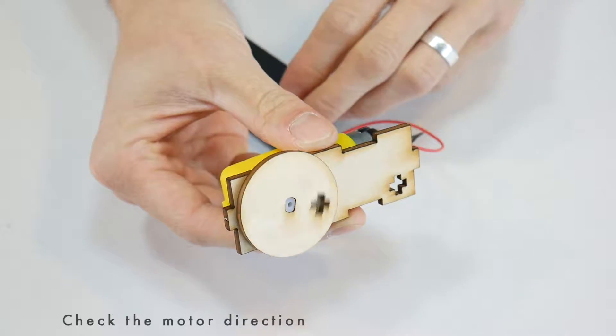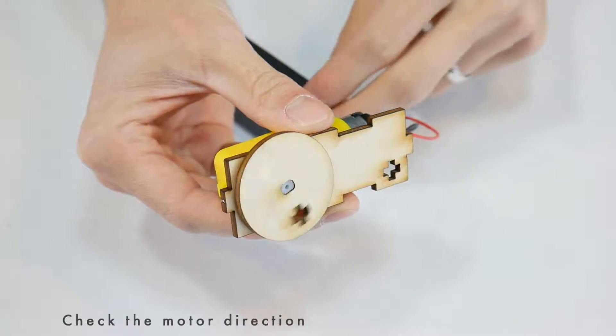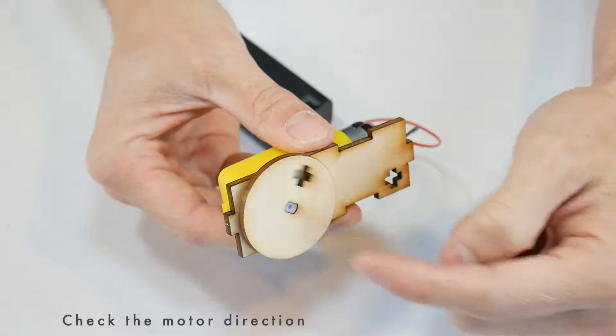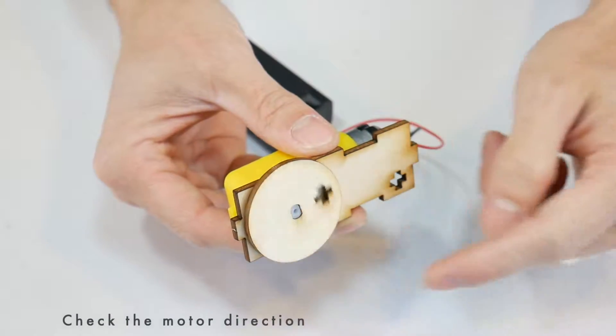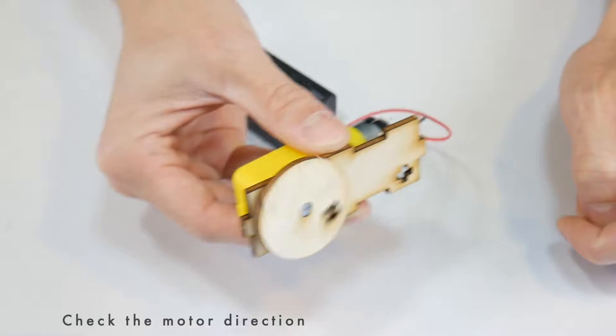Turn on the motor and notice which way the wheel is turning. Remember, this side that has the hole for the motor shaft should be the front of the robot, so we want it to go in this direction.